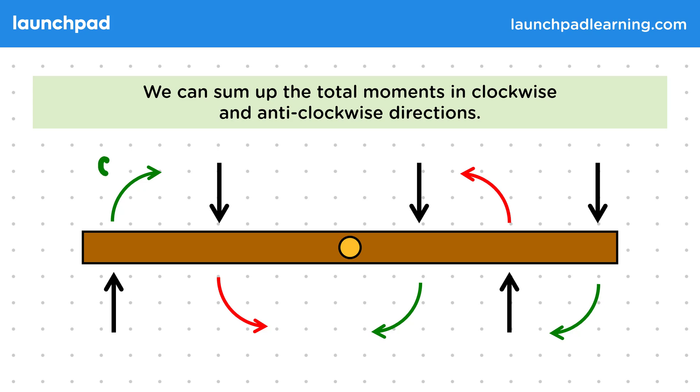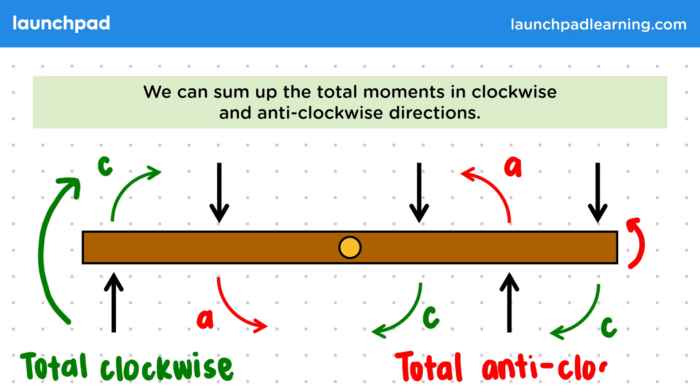First, the clockwise moments, caused by forces pushing up from the left or down from the right. We can then combine their effects to determine the total clockwise moment. And then we can do the same for the anticlockwise moments, caused by forces pushing down from the left or up from the right. Again, we can add up their effects to determine a total anticlockwise moment.